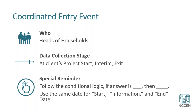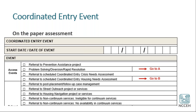A special reminder for this element is that there are some questions with conditional logic — if an answer is this, then you need to do this. You'll want to make sure you're following the instructions in the paper form or in HMIS. Similarly to our last element, we'll use the same start information and end date to record this event. On the paper assessment, you'll see at the beginning we have our start date or date of event — when did this referral occur, when did this access event occur? Let's go into more detail with those event types.